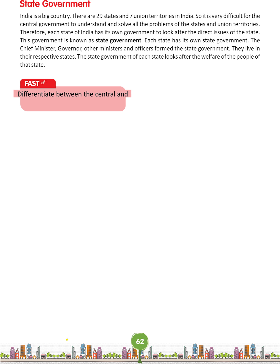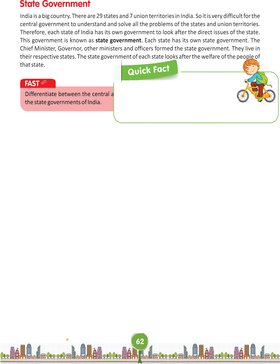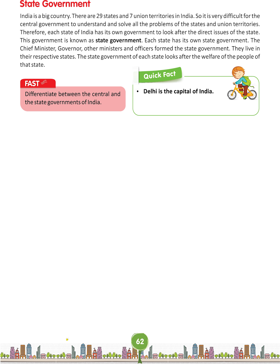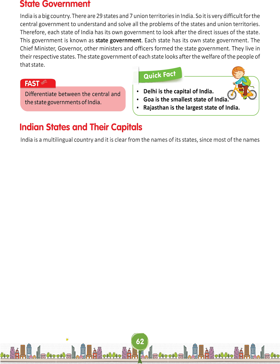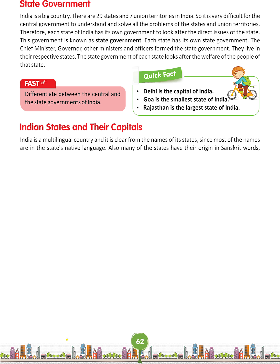Quick Fact: Delhi is the capital of India. Goa is the smallest state of India. Rajasthan is the largest state of India. Indian States and their Capitals. India is a multilingual country and it is clear from the names of its states, since most of the names are in the states' native language. Also, many of the states have their origin in Sanskrit words, which was once the main language of India.